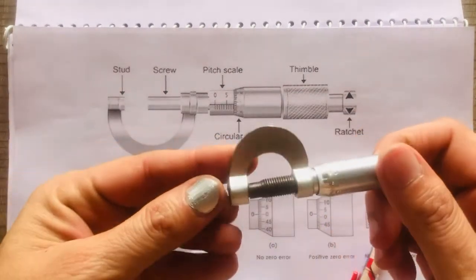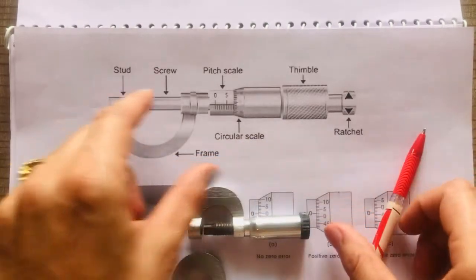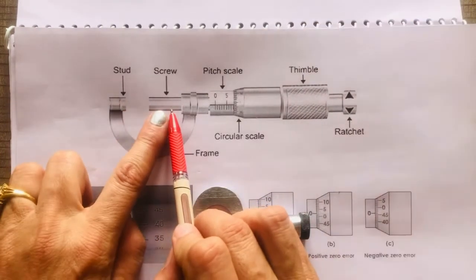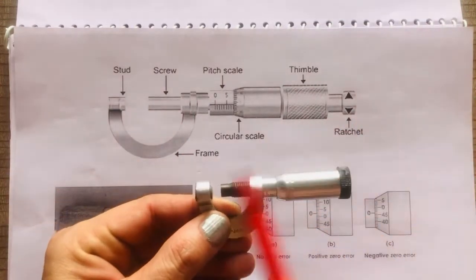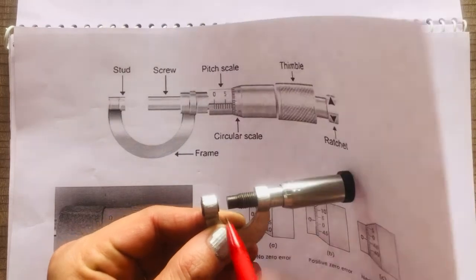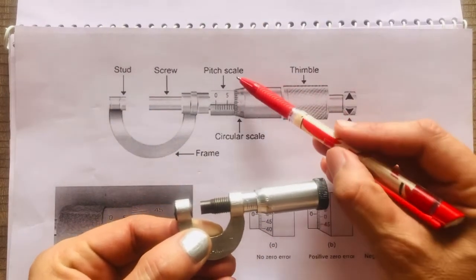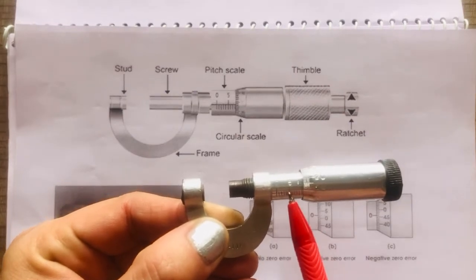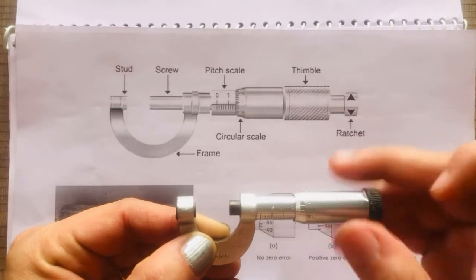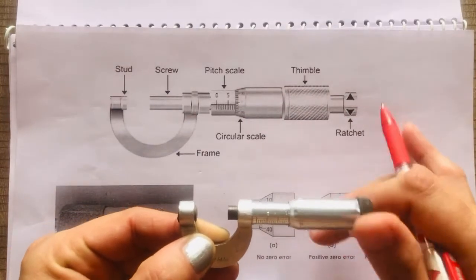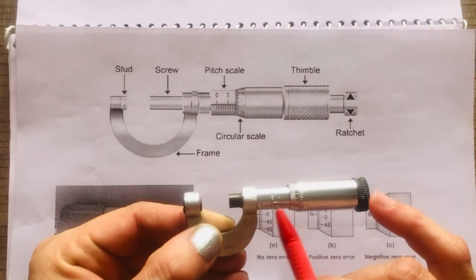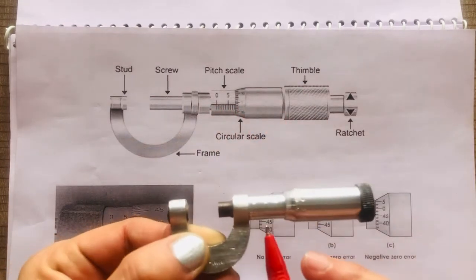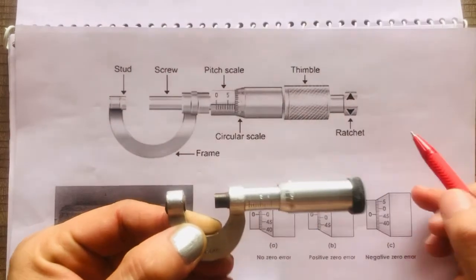I have this screw gauge in my lab. First of all, we will cover the construction of the screw gauge. So these are the two studs — this one and this one. This is the screw gauge. This is the pitch scale, also called the main scale. We can see the markings: 0, 5, 10, 15. This line is called the reference line.